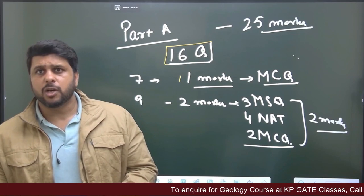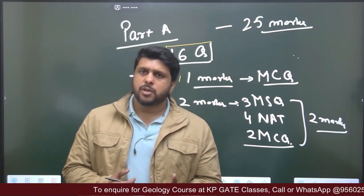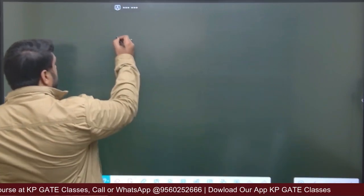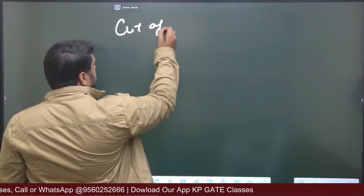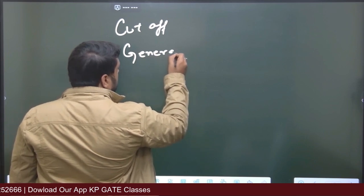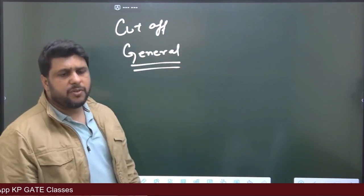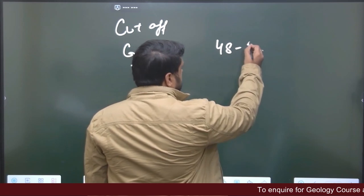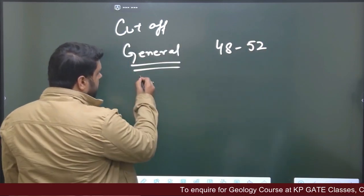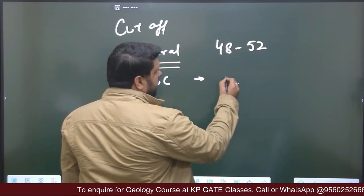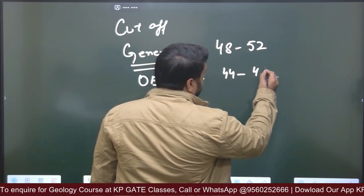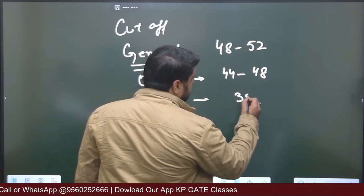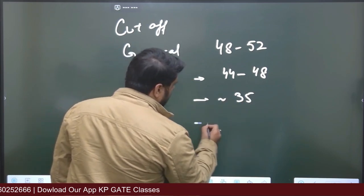Regarding the cutoff that is likely to come: for General category, the cutoff is expected to be somewhere between 48 to 52. For OBC it is going to be between 44 to 48. For SC students it will be somewhere around 35, and for ST students it will be somewhere around 30.